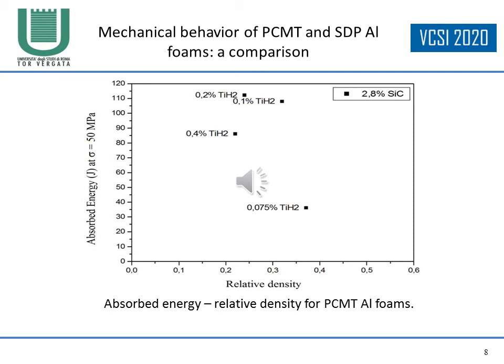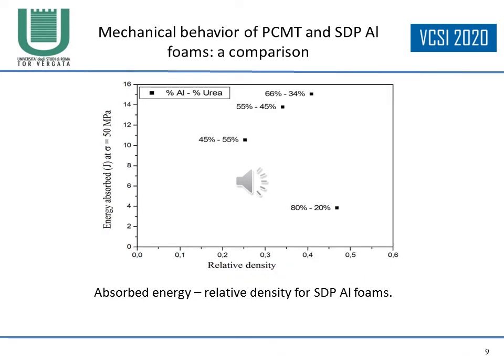In this slide, absorbed energy in joules versus relative density for PCMT foams is reported for a fixed amount of silicon carbide. The following slide reports absorbed energy versus relative density for sintering and dissolution process aluminum foams as a function of aluminum and urea content.